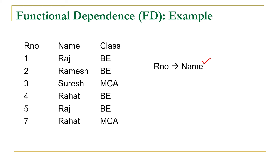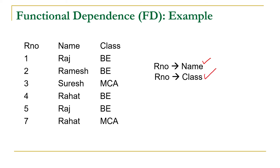Now let us consider functional dependence between role number and class. For each value of role number, we are getting only one value of class. Since role number is unique, there is no chance of getting multiple values of class for a given role number. For role number 1, class is BE; for role number 2, again BE; for role number 3, it is MCA. So for each value of role number we get only one value of class, meaning role number functionally determines class.